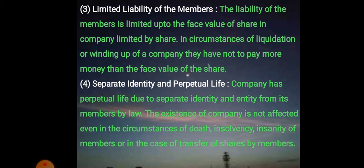The fourth advantage is separate identity and perpetual life. The company gets a separate identity as it is an artificial person which comes into existence by law. As an artificial person it does not face death, and if any member becomes insolvent, because ownership and management are separate, the company won't be affected. The company can only come to an end if it gets dissolved. The existence of the company is not affected even in circumstances of death, insolvency, or insanity of members or in cases of transfer of shares.